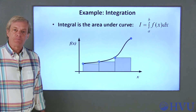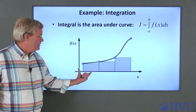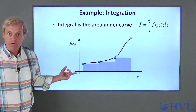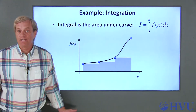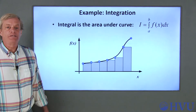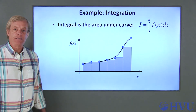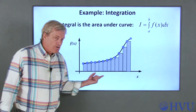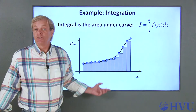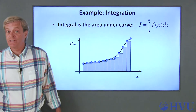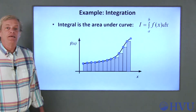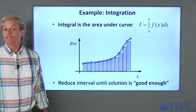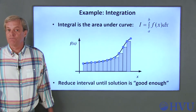We can solve this problem by subdividing the area into a number of intervals, defining rectangular areas as shown, and then adding up the areas of the rectangles. Then we increase the number of intervals and recalculate the area. If you keep increasing the number of rectangles, the solution should keep getting closer and closer to the actual solution. Typically, we stop this process once the estimated area doesn't change significantly when we add more intervals.